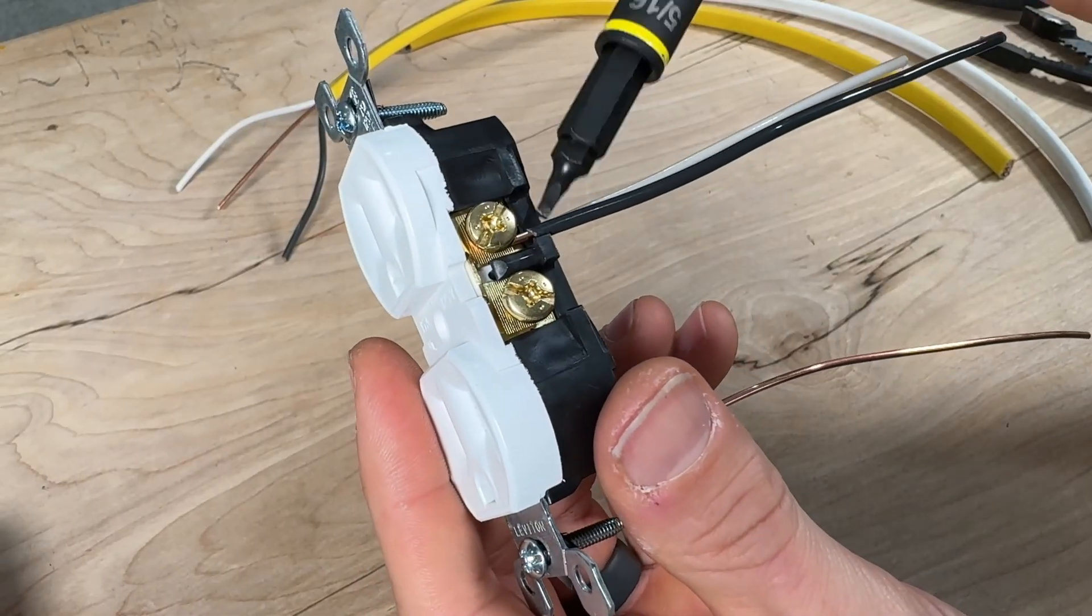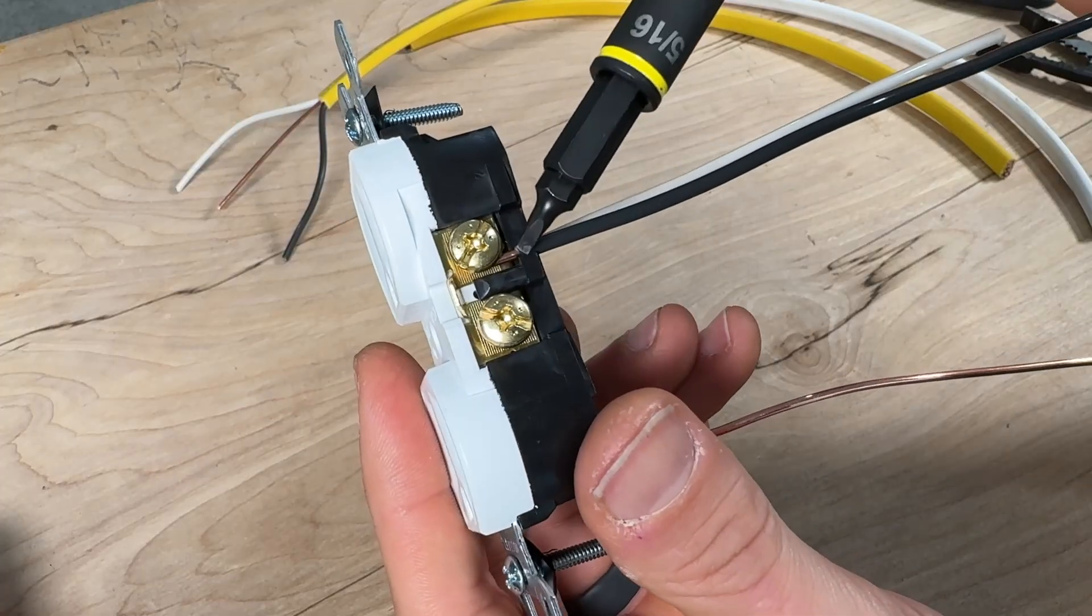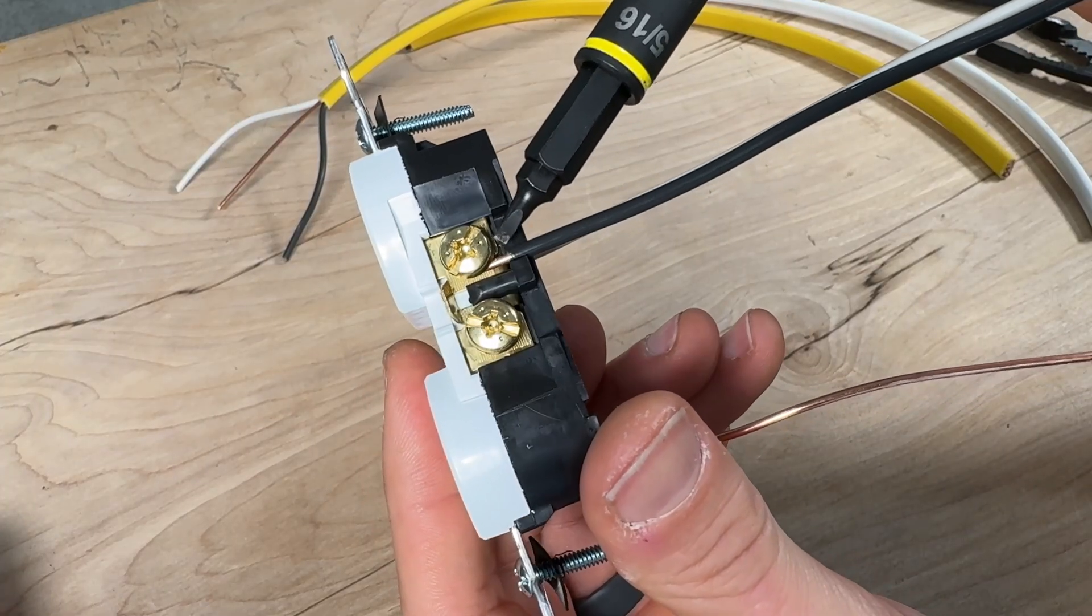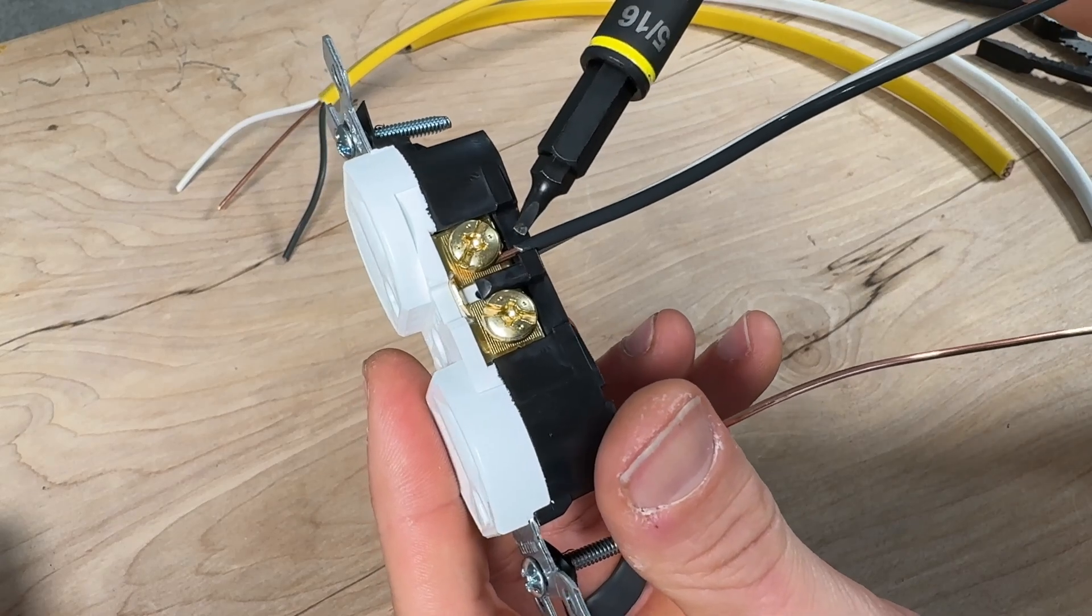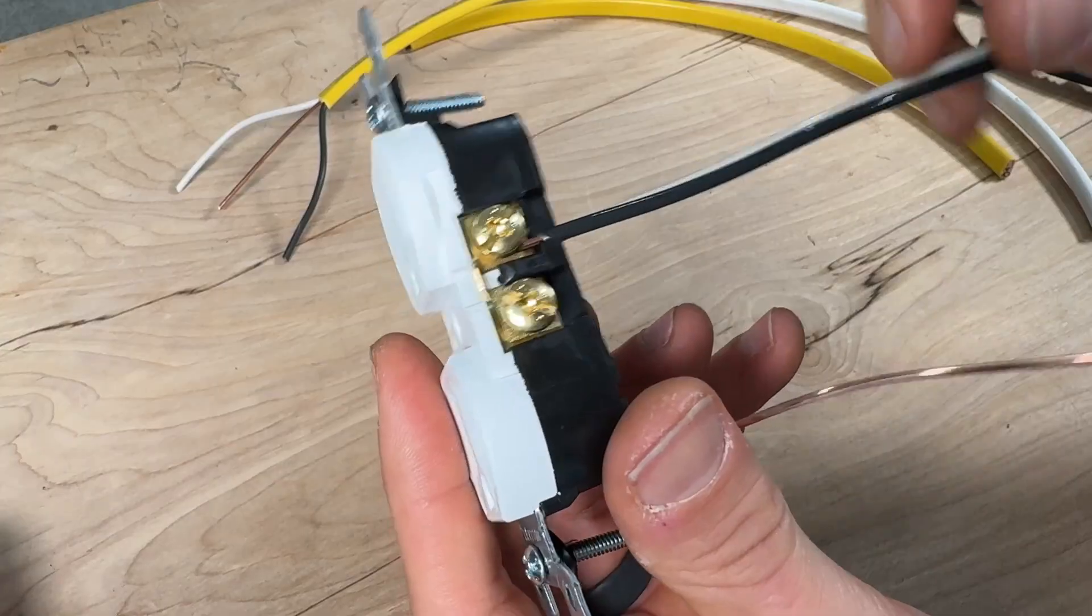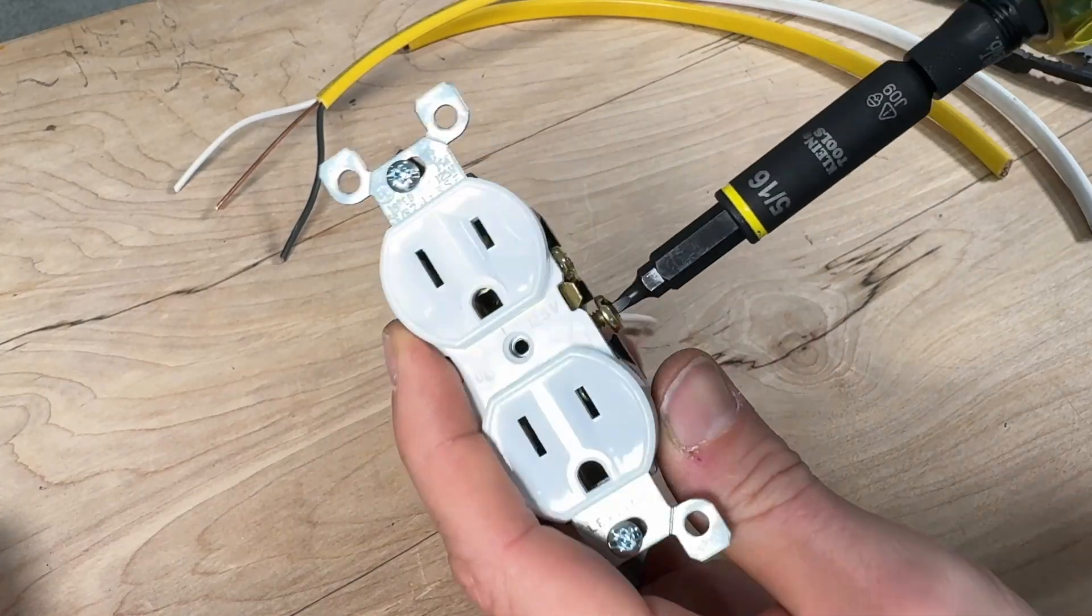This is what I would want to see. I want to make sure there's no insulation below the screw terminal that would separate the screw terminal from the actual copper. Also, I don't want to have the insulation stripped far enough back where I have exposed copper past the housing.